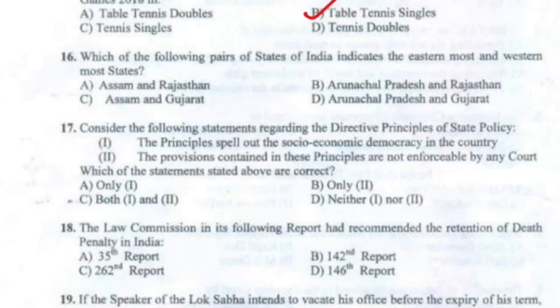Question 16: Which of the following pairs of states of India indicates the easternmost and westernmost states? That is Arunachal Pradesh, which is the easternmost, and Gujarat, which is the westernmost state of India.